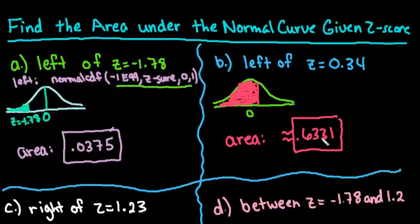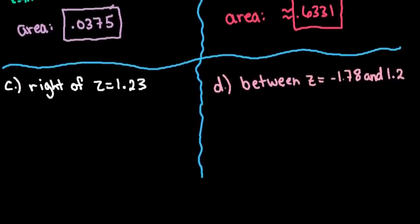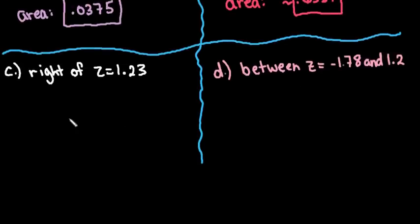So with this basically for this part the left it's probably just as easy to look at a table if you are given the left, but for the next two the area to the right and the area between, it's easier to use the graphing calculator to find these especially part D because you can just plug it in exactly as it is.